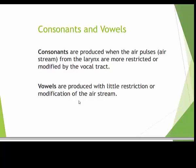Two major divisions of the IPA are consonants and vowels, because the way that these are produced are a bit different. Consonants are produced when the airstream becomes more restricted or modified by the vocal tract. Vowels, on the other hand, are produced with relatively little restriction or modification of the airstream inside the vocal tract.